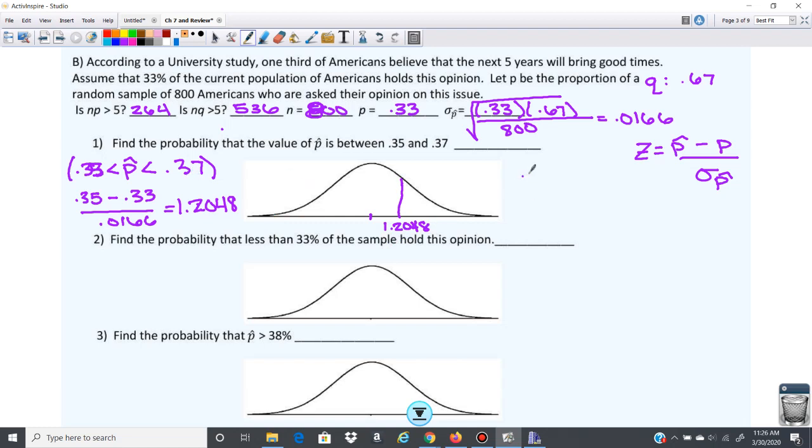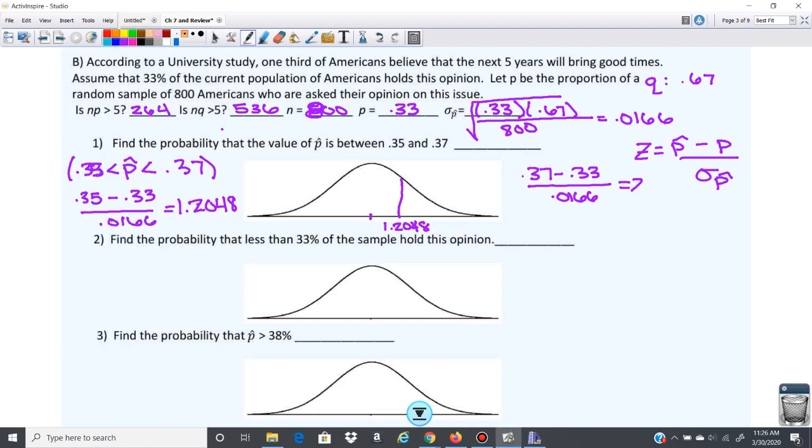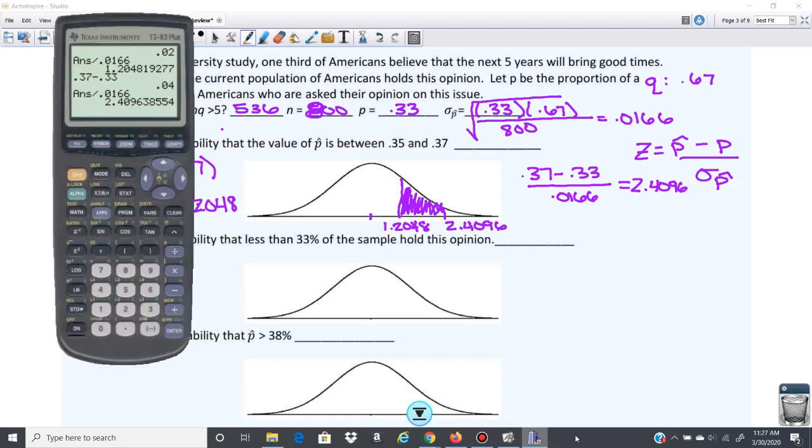And then our 0.37, 0.37 minus 0.33 over 0.0166. So let's go ahead and get that z-score. And that gives us 2.4096. So we'll say that's about right here. So this is what we're trying to find, this area in between here, and we'll use our normal CDF function. So we'll go second vars, normal CDF, and then we've got 1.2048, 2.4096. And if you are using the 84, it's a mean of 0 and a standard deviation of 1. So that gives you 0.1061.